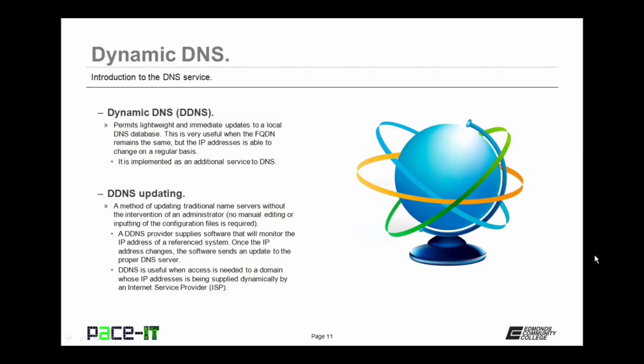A DDNS provider supplies software that will monitor the IP address of the reference system. Once the IP address changes, the software sends an update to the proper DNS server. DDNS is useful for when access is needed to a domain whose IP address is being supplied dynamically by an ISP — or Internet Service Provider — that way the IP address can change, but people can still get to the service they're looking for.